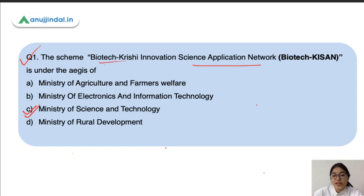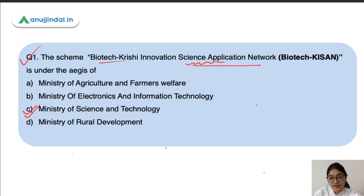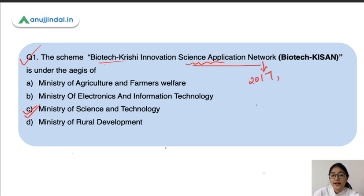As the name suggests — Biotech Krishi Innovation Science Application Network — there will be a network of institutions. The name refers to science application and innovation: whatever technologies exist at the laboratory level will be implemented at the farm level. This scheme was launched by the Ministry of Science and Technology in 2017. The Department of Biotechnology is the nodal department for the implementation of this scheme.